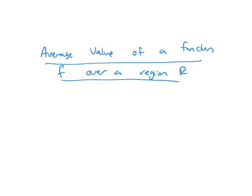It's very similar to how average value worked for a function of a single variable. The average value is going to be a double integral over your region, and you're going to multiply by a coefficient: 1 over,